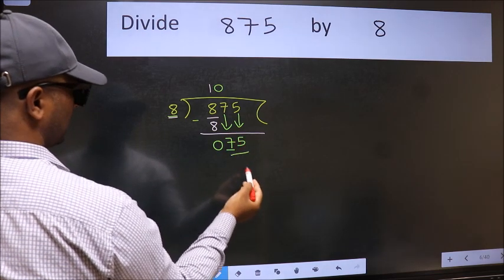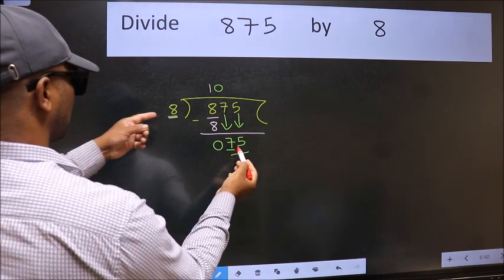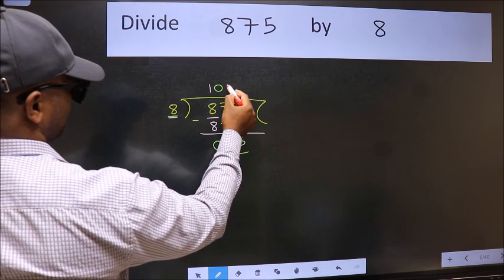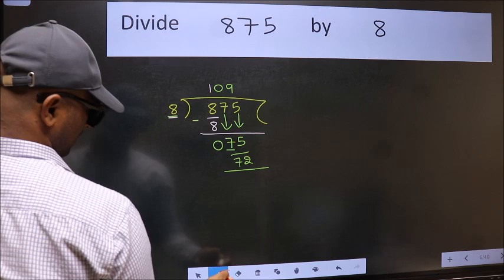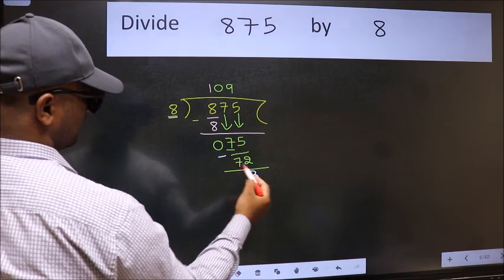Now 75. A number close to 75 in the 8 table is 8 nines, 72. Now we should subtract. We get 3.